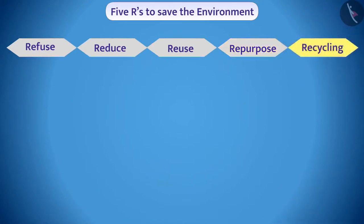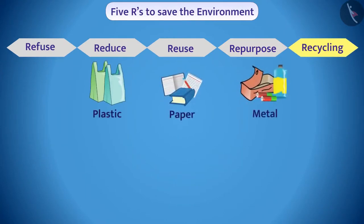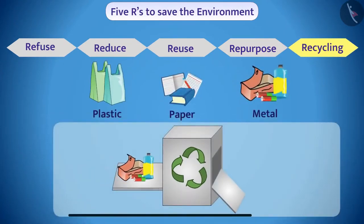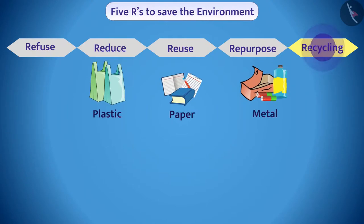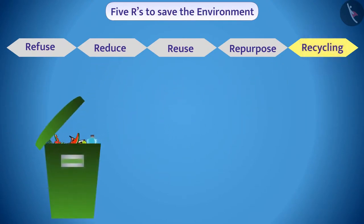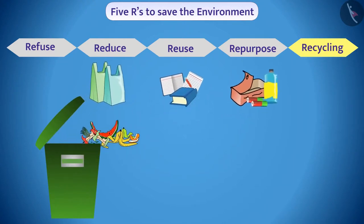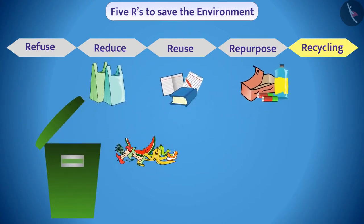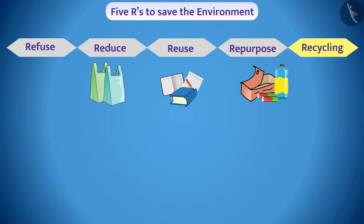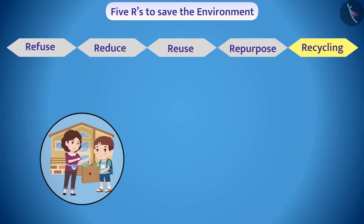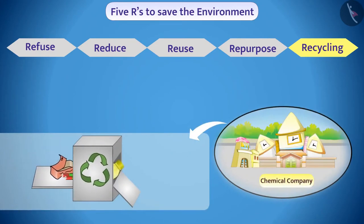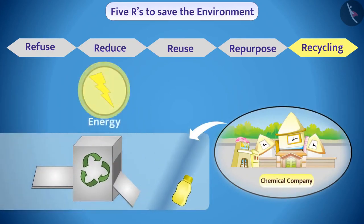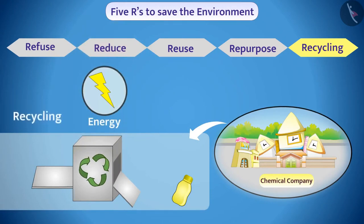The fifth R is Recycle. Items like plastic, paper, and metal can be used to make new things again — this is what we call recycling. Many items that can be recycled are sometimes thrown away as garbage. We should separate such items from the waste produced in the house. Various people in the village and city collect such items and give them to companies where they are recycled. Note that energy is required for the recycling process, so whenever possible we should focus on reuse.